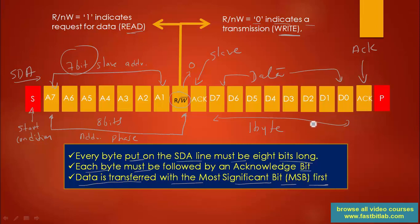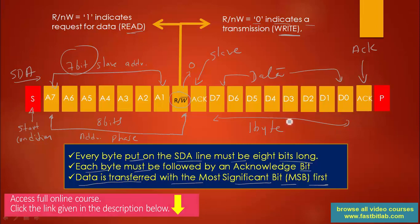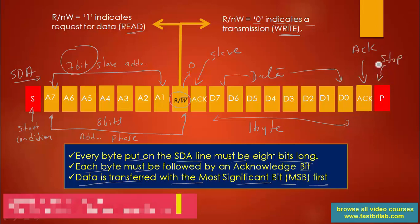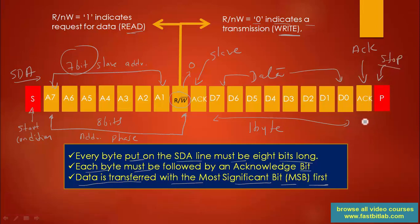When master wants to send more data, it can send more data. Whenever a byte of data is sent, an ACK will be received. When master decides to close the communication with the slave, master generates the stop condition. This is the stop condition which is generated by the master to close the communication. This is how the I2C protocol works — this is how master and slave communicate.